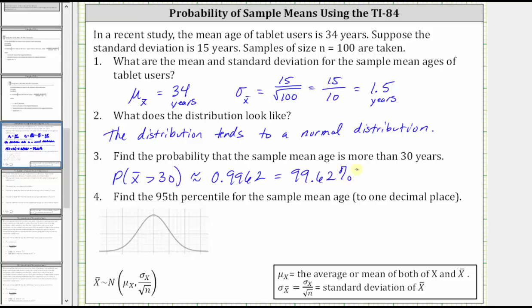Number four, we're asked to find the 95th percentile for the sample mean age, which is the mean age that is greater than or equal to 95% of the other mean ages. We can indicate this as the probability that x is less than k, where k is the 95th percentile, is equal to 0.95. To model this on the curve shown here, if k is here, the area under the curve to the left of k is equal to 0.95.